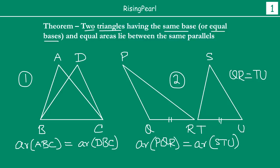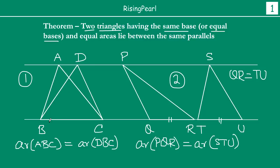So, what the theorem is telling us is that if you join these two vertices P and S, then PS will be parallel to QU. It means that vertex P of triangle PQR and vertex S — they will lie on a straight line such that that line is actually parallel to QU. Then basically we can say that these two triangles are between the same parallel lines. So this is what the theorem is telling us, and we have to prove this.